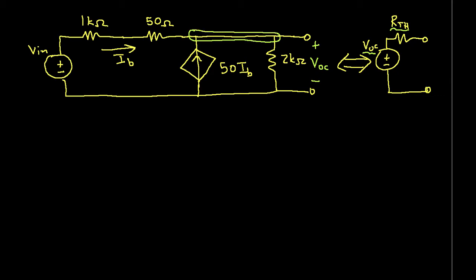Kirchhoff's current law is that the sum of the currents entering the node is equal to the sum of the currents leaving. So let's label the current through the 2k ohm resistor as I sub 2. The sum of currents entering the node include I sub B and 50 times I sub B. That's coming from the dependent current source. And this would be equal to I sub 2.